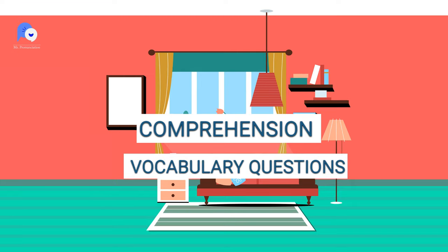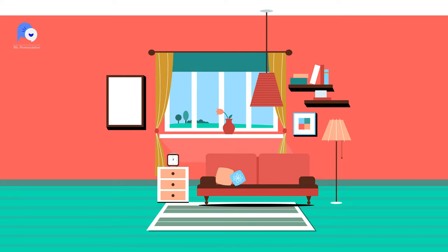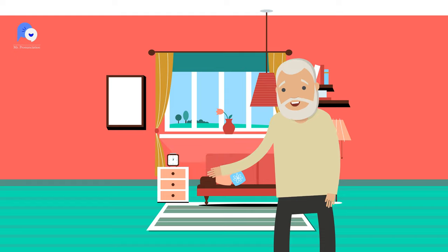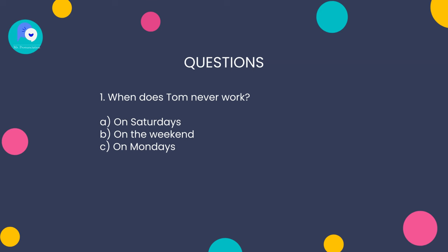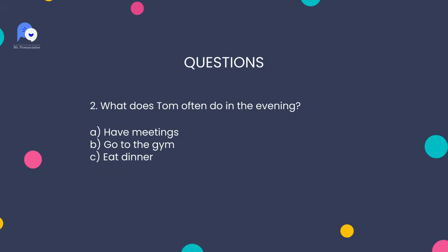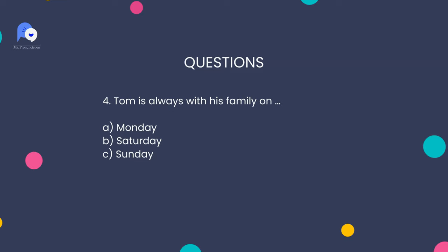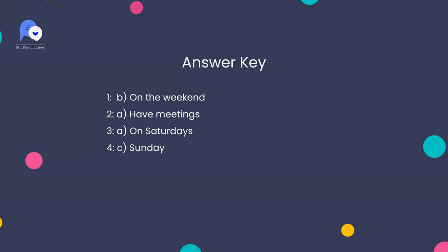Part 5: Comprehension and vocabulary questions. Great job. Now let's see if you remember the story. Answer these questions. 1. When does Tom never work? 2. What does Tom often do in the evening? 3. When is Tom free? 4. Tom is always with his family on... Answer review. Let's review the answers together.